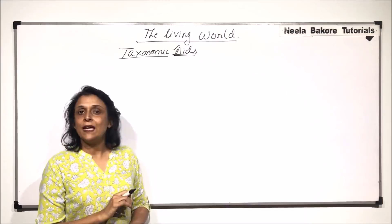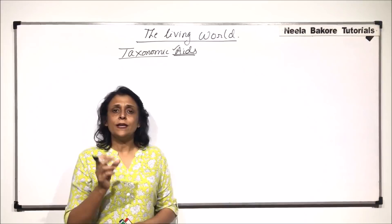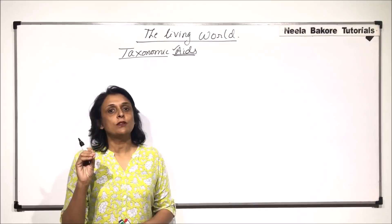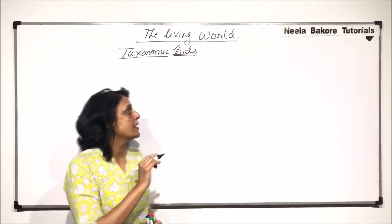We can have a botanical garden as a taxonomic aid, a zoological park as an aid. We can also have a museum or herbarium. There are also certain types of questionnaires called keys, where certain types of questions help us pinpoint a particular organism so that we can study it properly. We will take various aids one by one and try to understand how they help us.